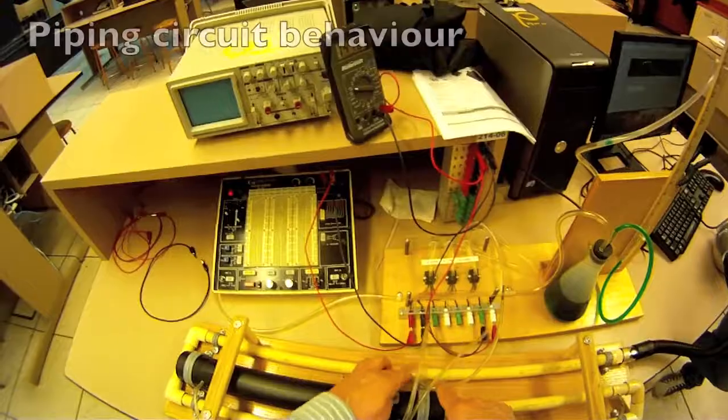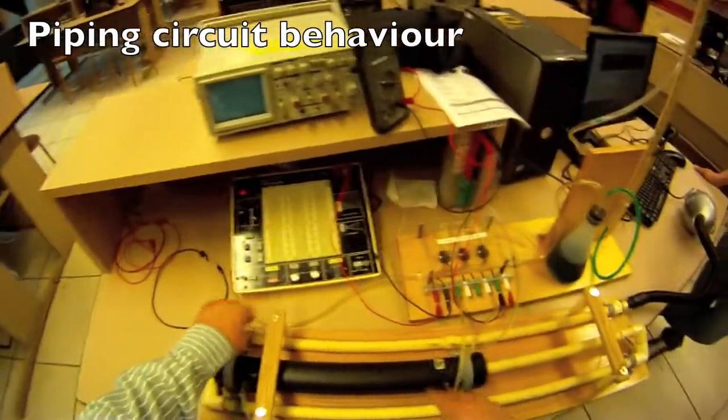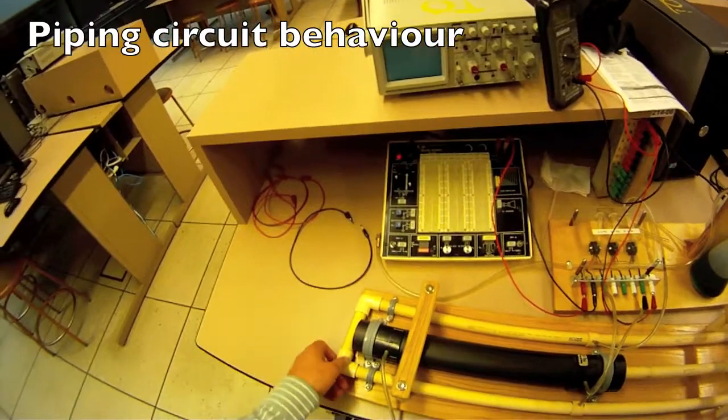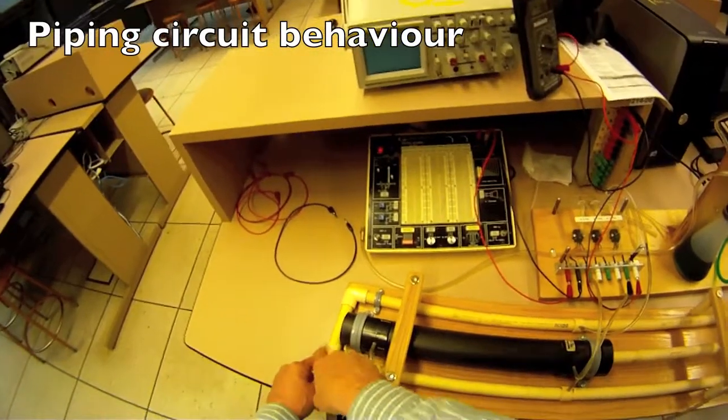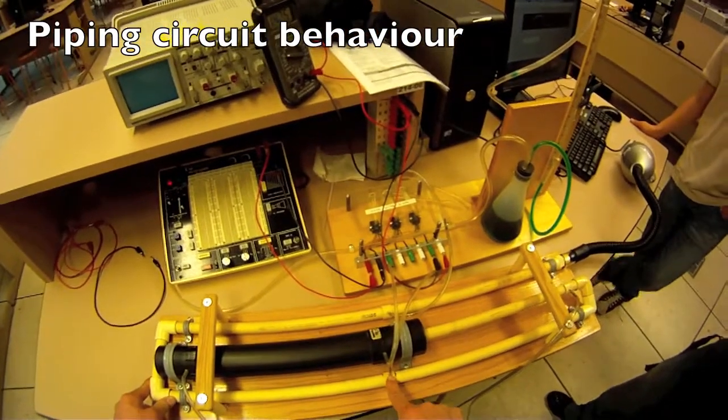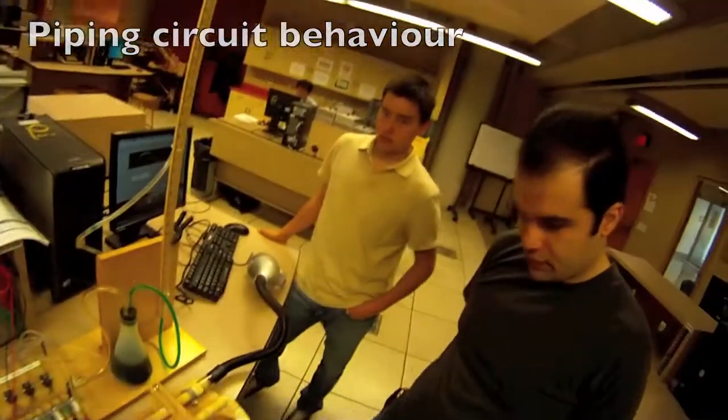Then it goes around the corner here, and there'll be friction losses in the pipe and some minor losses in the bends because of the secondary flows. Then it comes along here, so the pressure here should be lower.